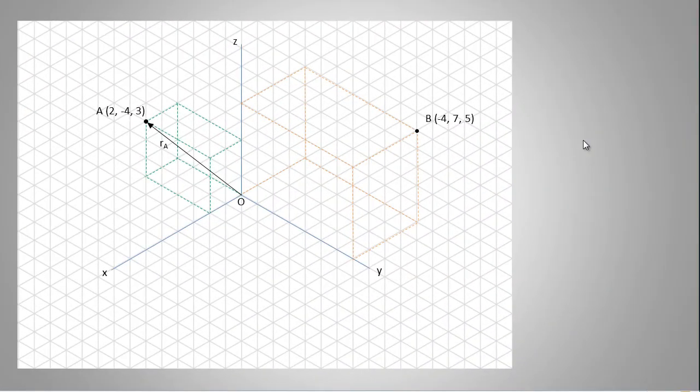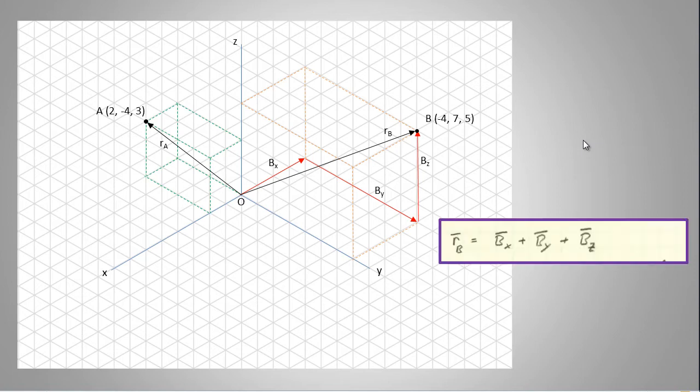We can also establish a point B in space located at Cartesian coordinates (-4, 7, 5). This point is again identified by a vector RB, and vector RB itself can be written as a vector sum of three Cartesian vectors: BX, BY, and BZ.